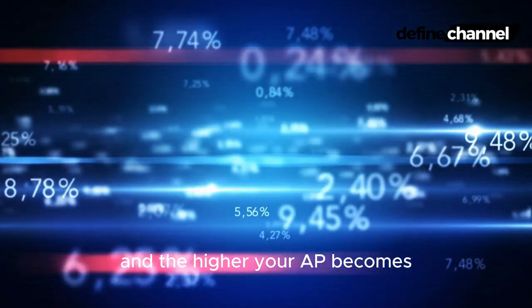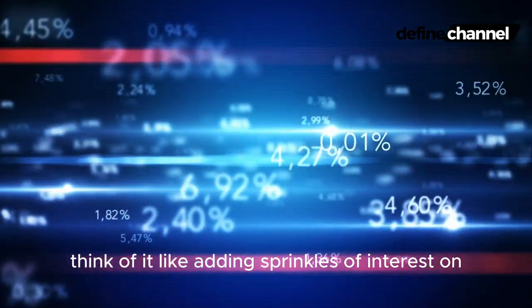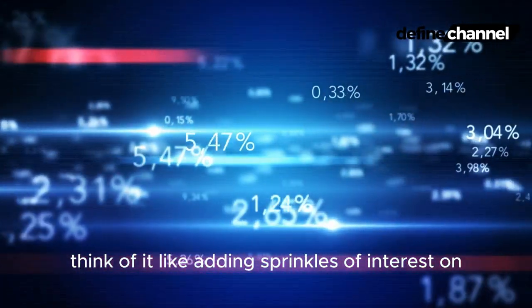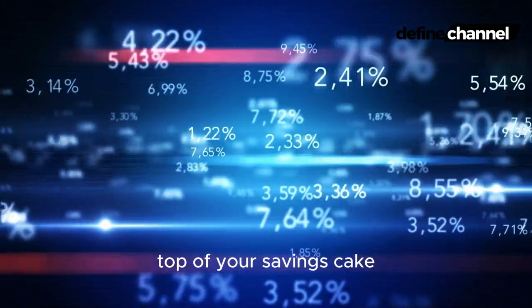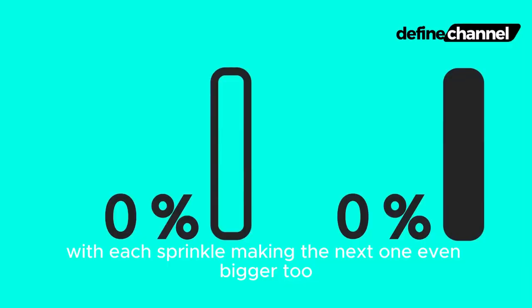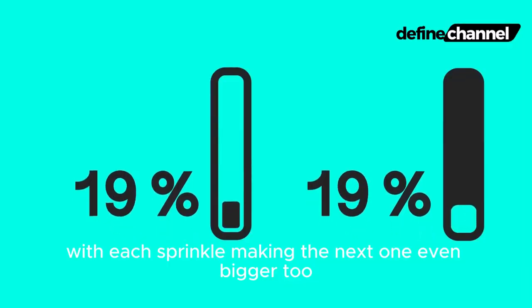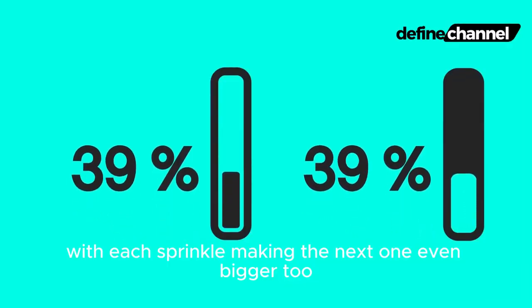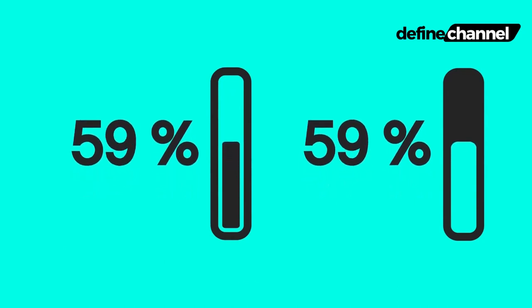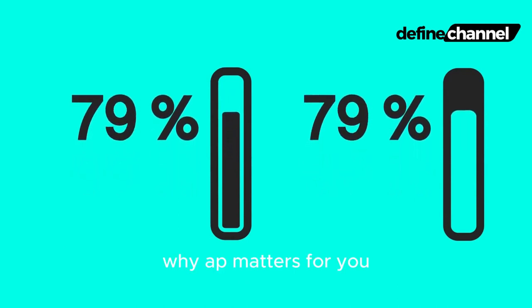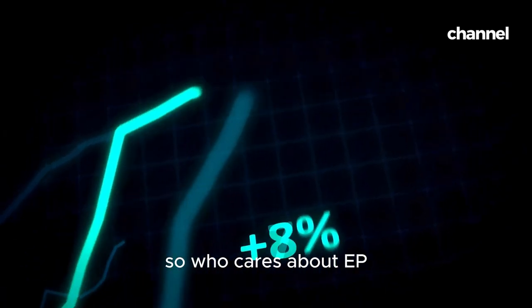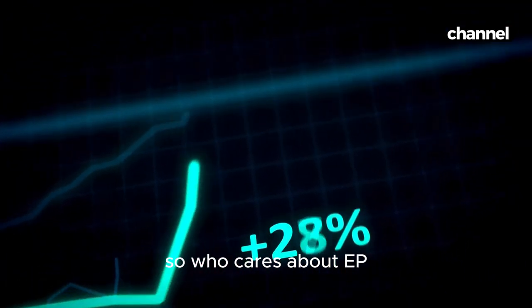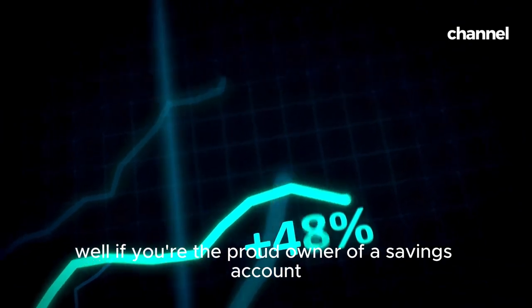The more frequent the compounding, the faster your money snowball builds and the higher your APY becomes. Think of it like adding sprinkles of interest on top of your savings cake, with each sprinkle making the next one even bigger. So why does APY matter for you?